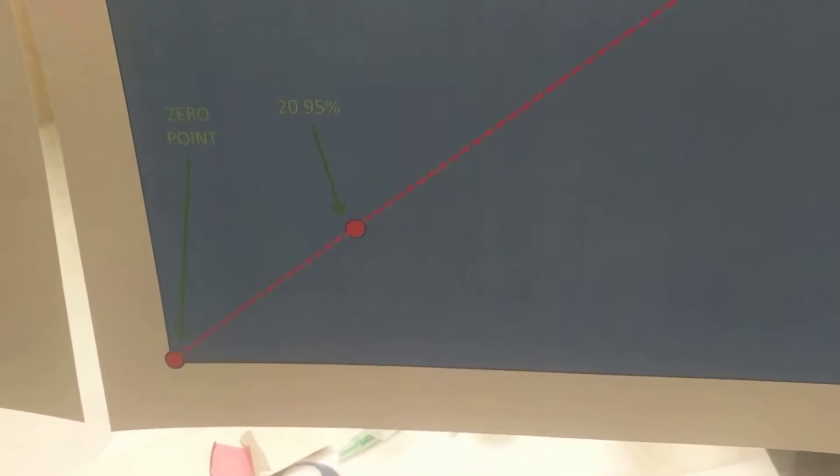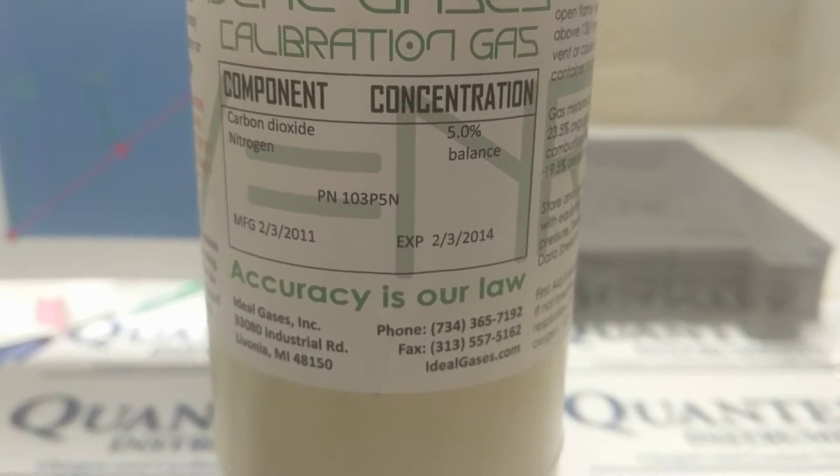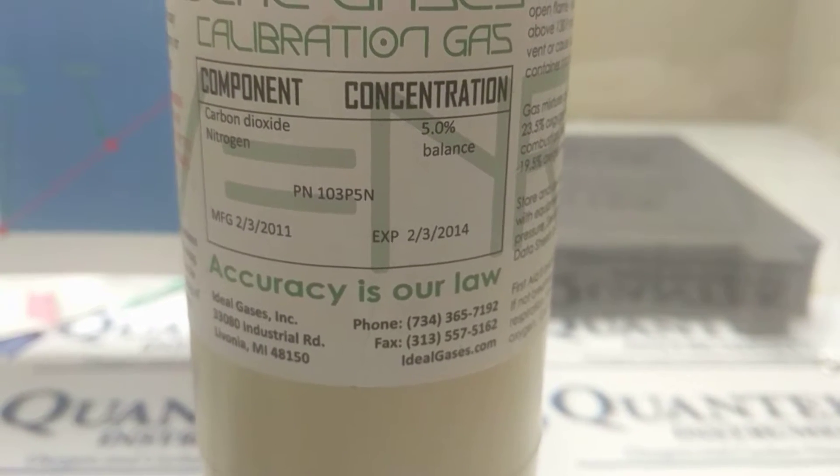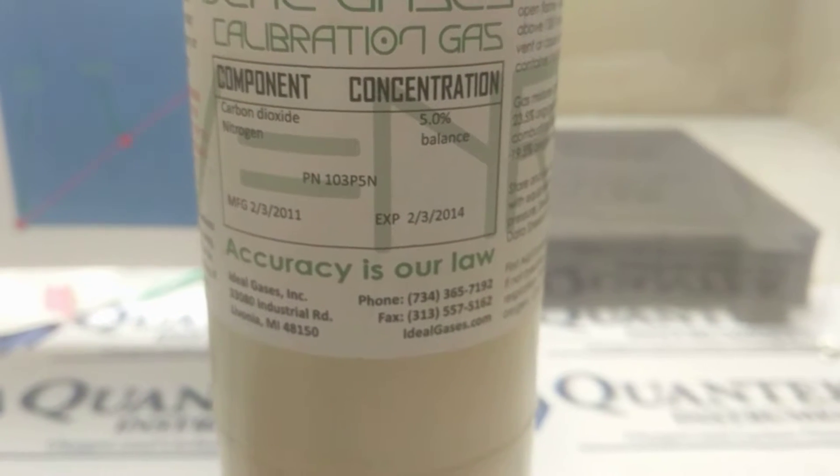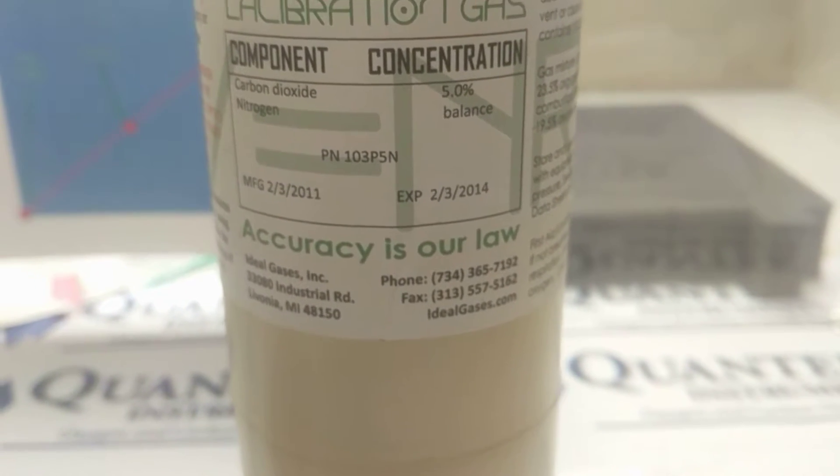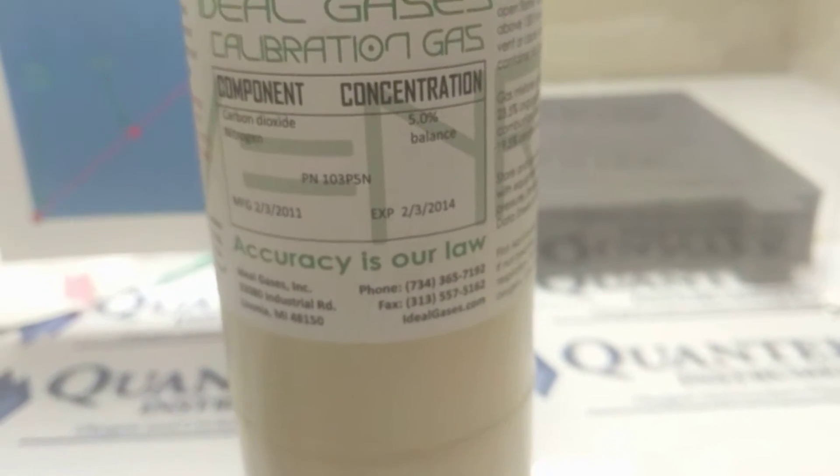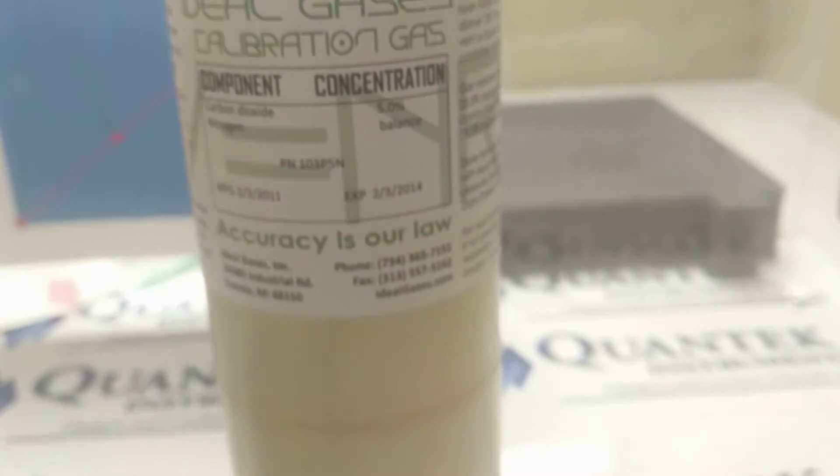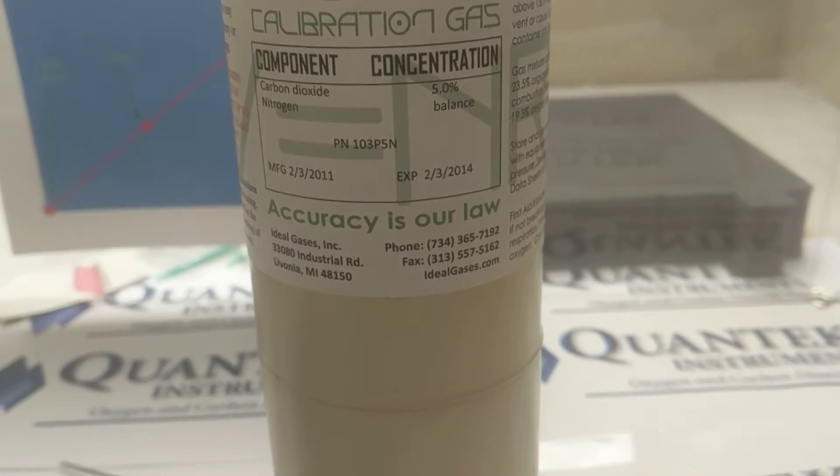So you may be asking yourself, how do we validate the zero? Let's check that. So to check the zero point, we're actually going to use 5% carbon dioxide, 95% nitrogen. You can use any zero gas really, nitrogen, carbon dioxide. Typically we'd use pure nitrogen, but the CO2 will not interfere with the reading at all, and we can use this to zero the instrument just as well as any other zero gas.